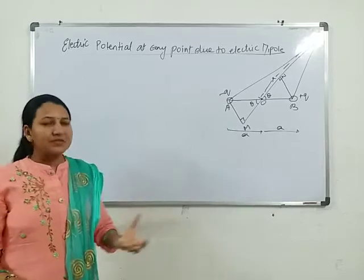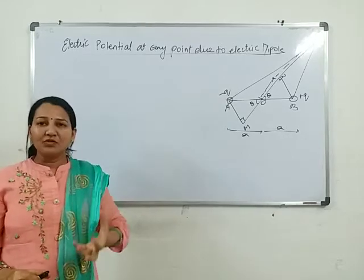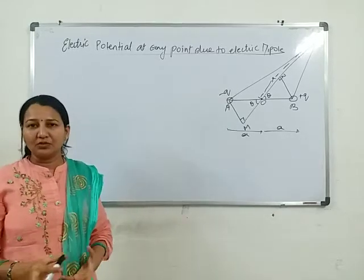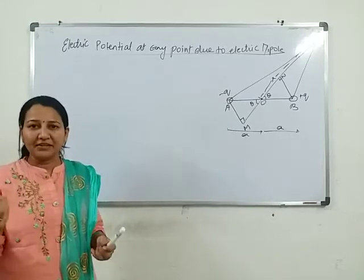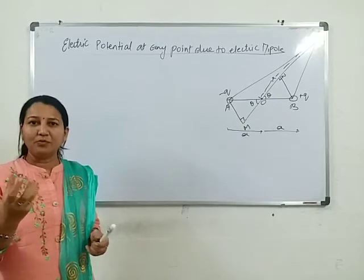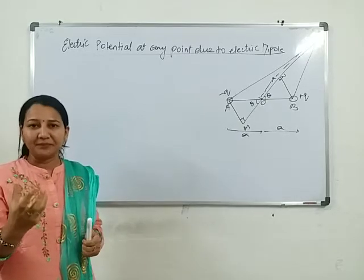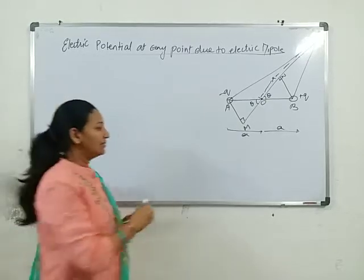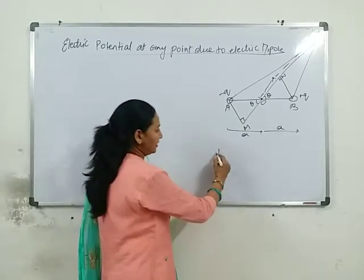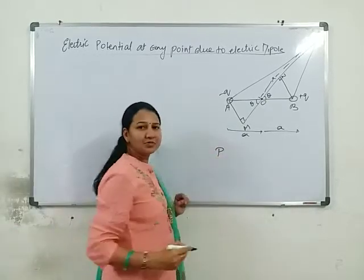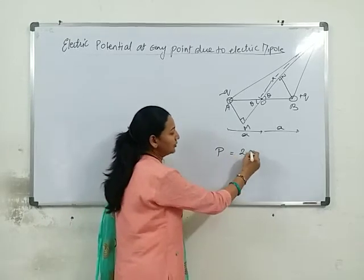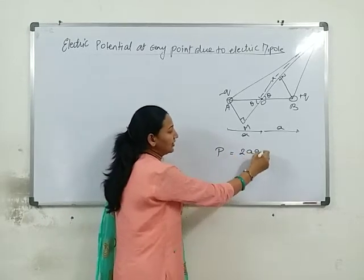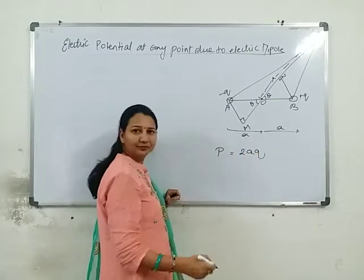First of all, when the dipole word comes, we should know P — dipole moment, P. The answer is P. Second, P is equal to 2aq.